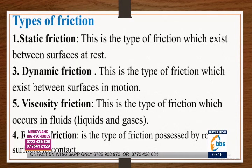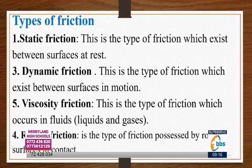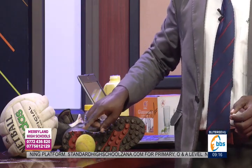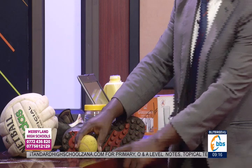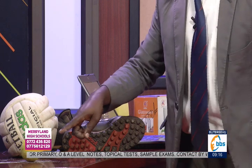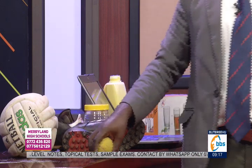Number two is dynamic friction — the type of friction which exists between surfaces in motion. The moment you set the ball in motion on the table, it possesses what we call dynamic friction.